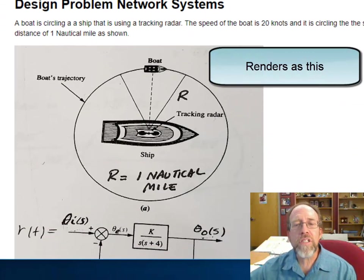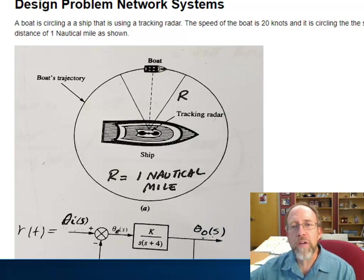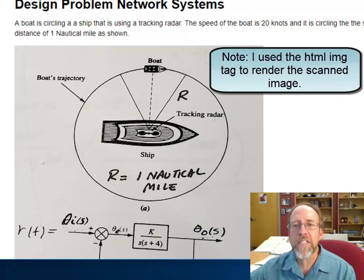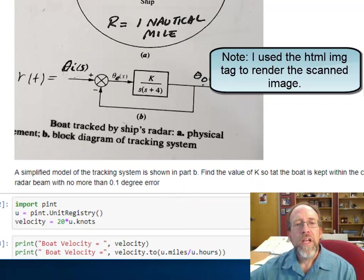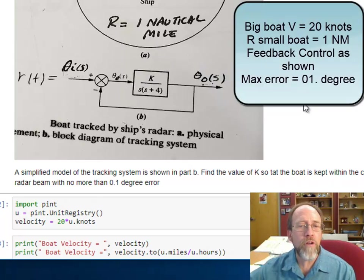If you look at this, this looks like what you would see as a real problem. Here is a boat circling a ship using a tracking radar. The speed of the boat is 20 knots, it is circling the ship at a distance of 1 nautical mile. You've got a radar system that's tracking the boat, an actual feedback loop diagram of the radar system, and we want to keep the boat within a tracking of no greater than 0.1 degree error. If this is your feedback system loop, then what does the k need to be?